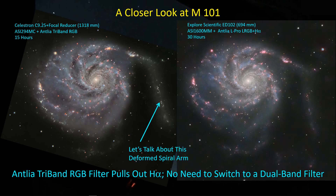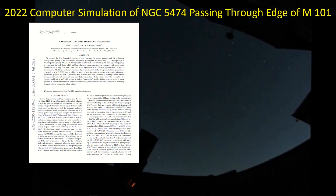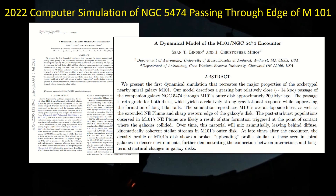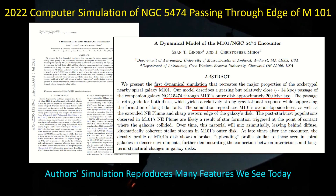Now let's turn our attention to the bent spiral arm of M101 and where it may have come from. A couple of weeks ago I came across this 2022 paper — so a fairly recent paper — in which the authors performed a dynamical simulation of the interaction between NGC 5474 and M101. It's the first time a dynamical simulation has been performed for these two galaxies, and what they conclude is that about 200 million years ago, NGC 5474 passed through M101.